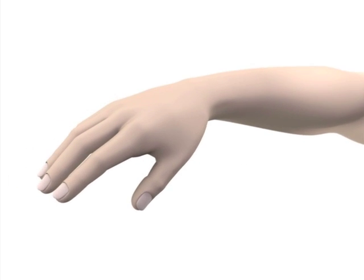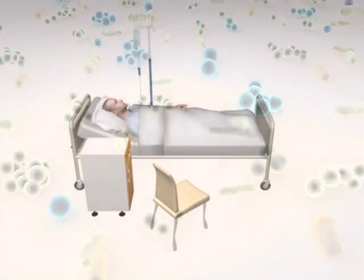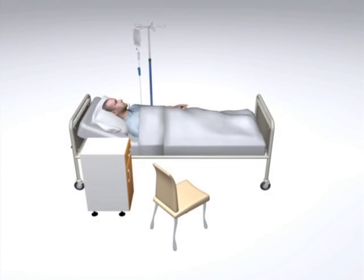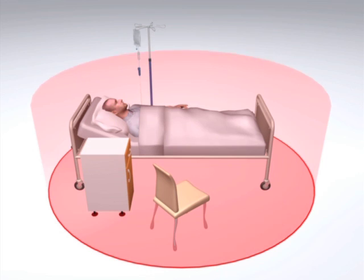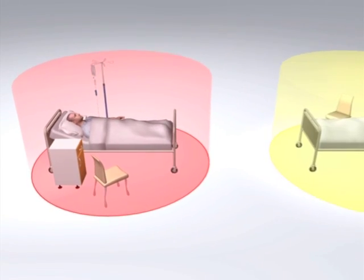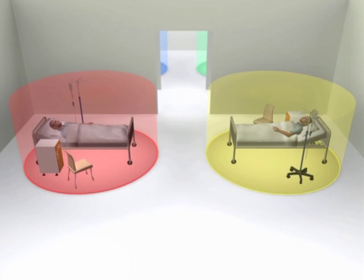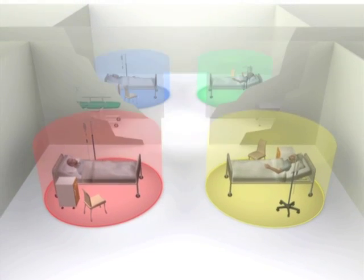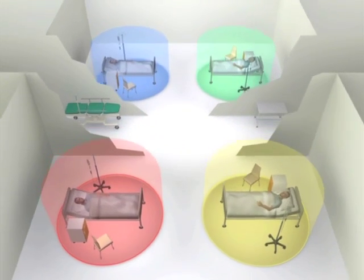The skin and mucous membranes of every human being are colonized by various microbial species. When hospitalized, patients gradually shed these microorganisms onto inanimate objects in their immediate surroundings — for example, onto bed linens, gowns, and bedside furniture. Hospitals contain patient zones consisting of a patient and his or her immediate surroundings. Other areas such as corridors and public areas are also colonized with microorganisms, though to a lesser extent than patient rooms.